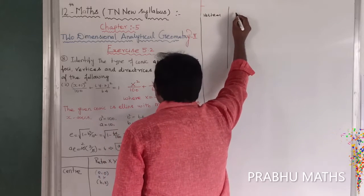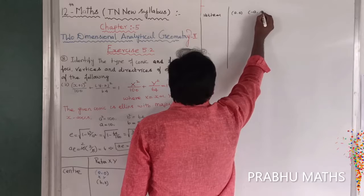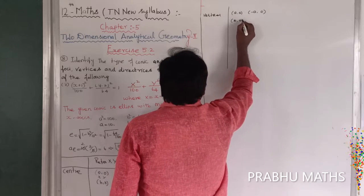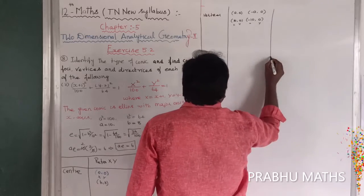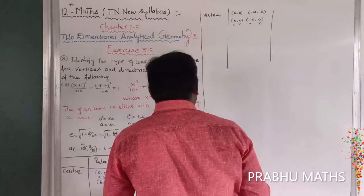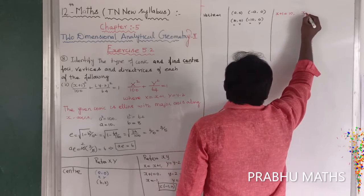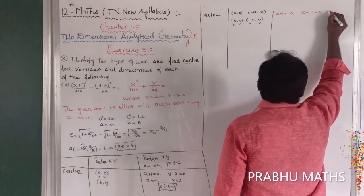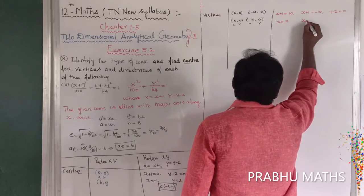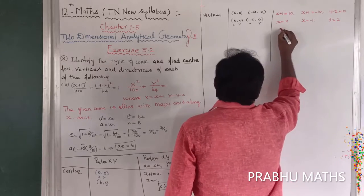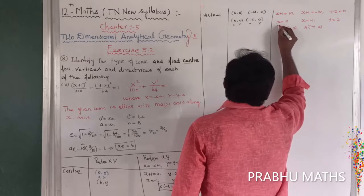Vertices along the x-axis: (a, 0) and (-a, 0), i.e., (10, 0) and (-10, 0) in capital X, Y. Converting: x + 1 = 10 gives x = 9; x + 1 = -10 gives x = -11. y - 2 = 0 gives y = 2. So vertices are A(9, 2) and A'(-11, 2).